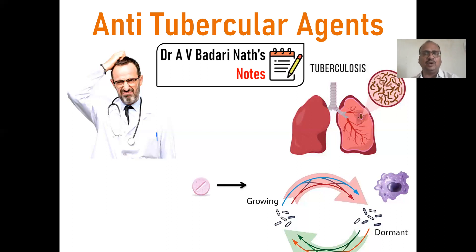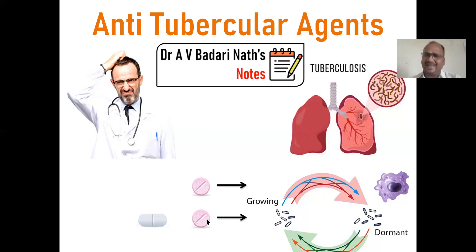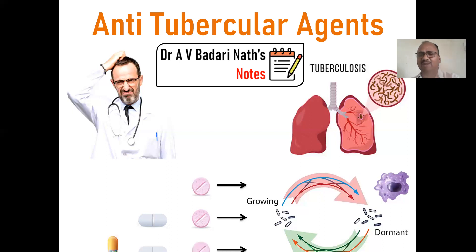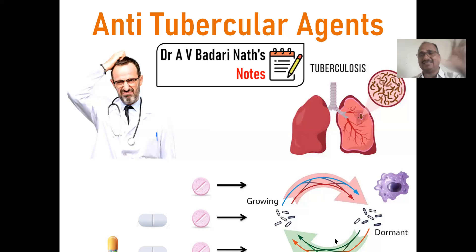Doctors got a new idea and started giving multi-drug treatment. With a single drug, the organism got resistant. With two different drugs, it showed the same pattern — multi-drug resistance. Adding more drugs led to extensively drug-resistant TB. So we have three types: single-drug resistance, multi-drug resistance TB, and extensively drug-resistant TB.